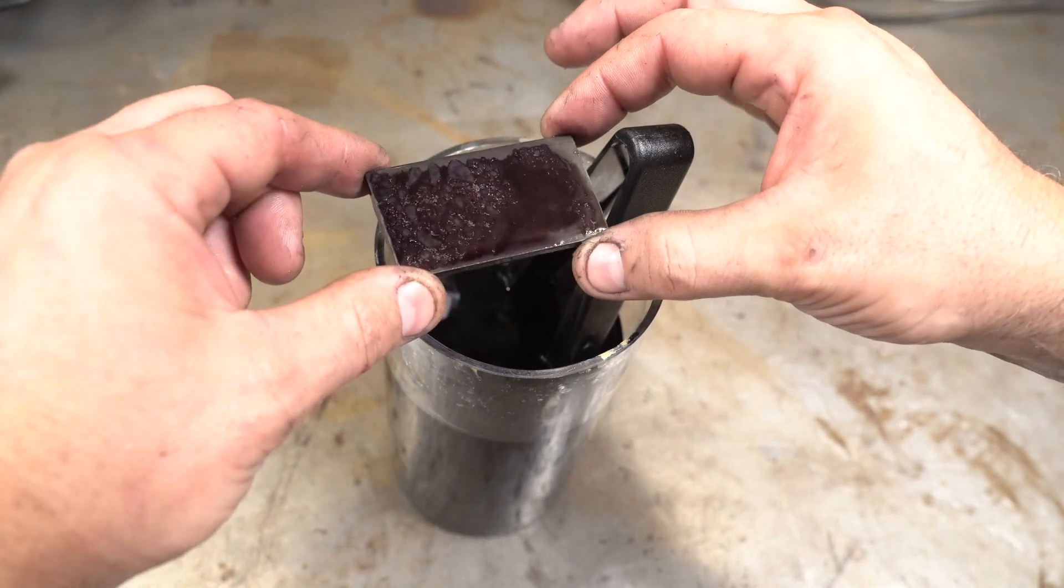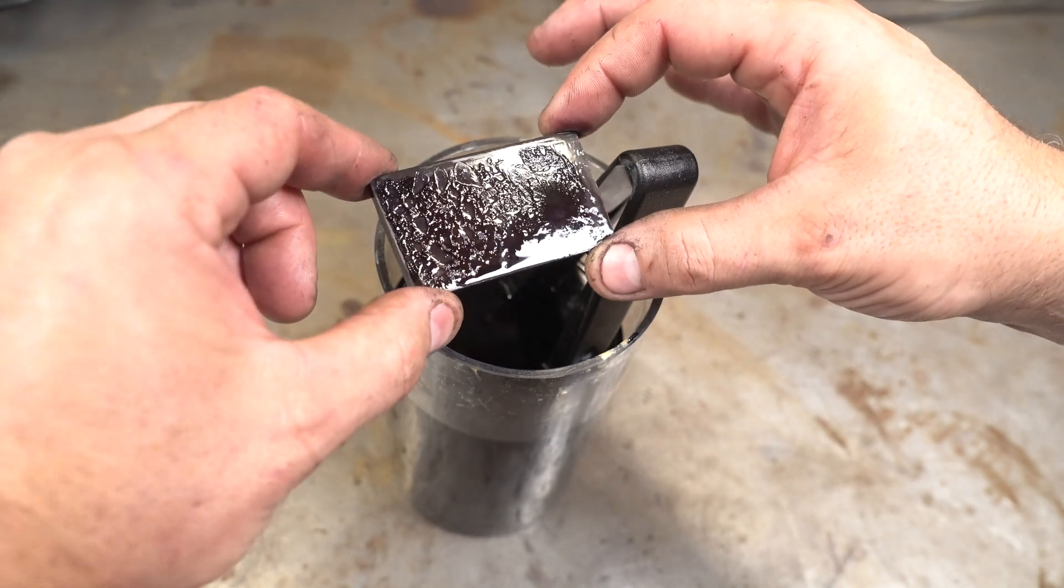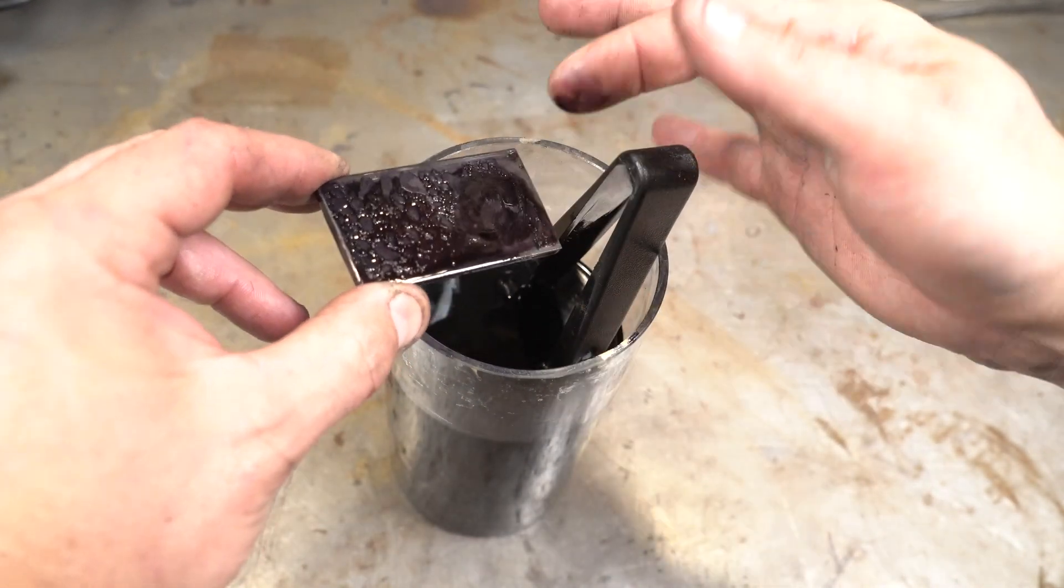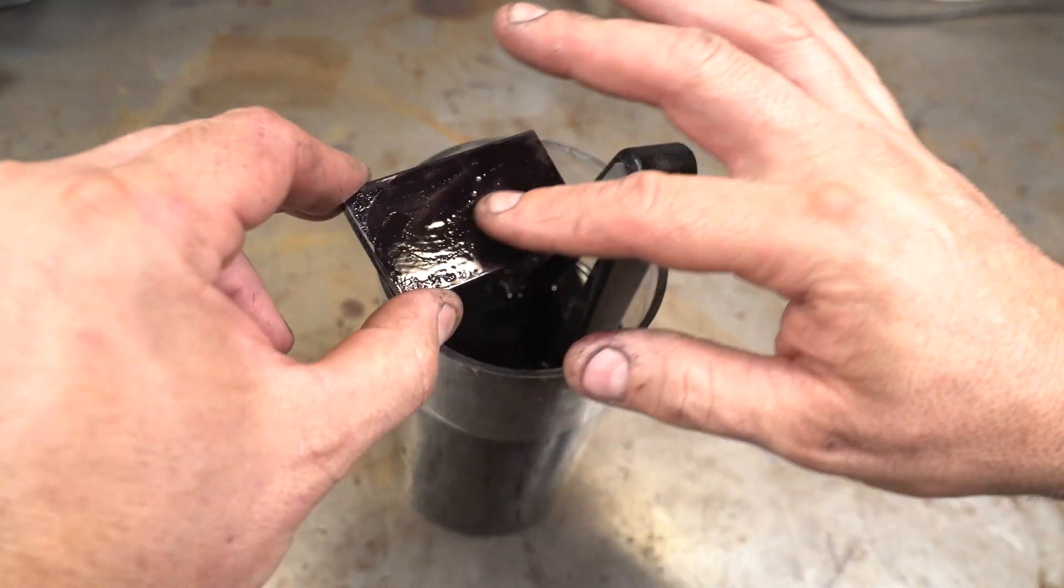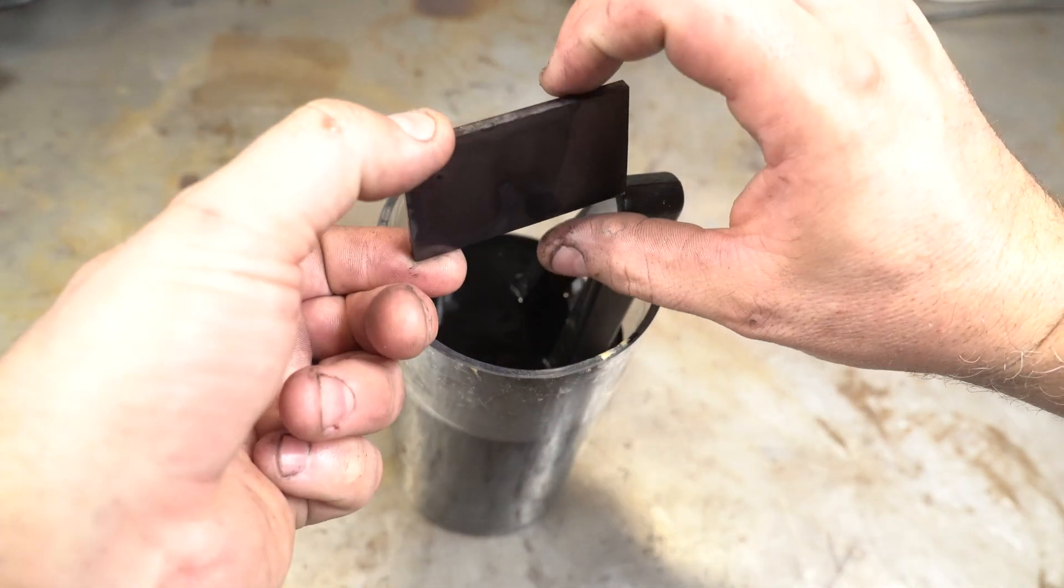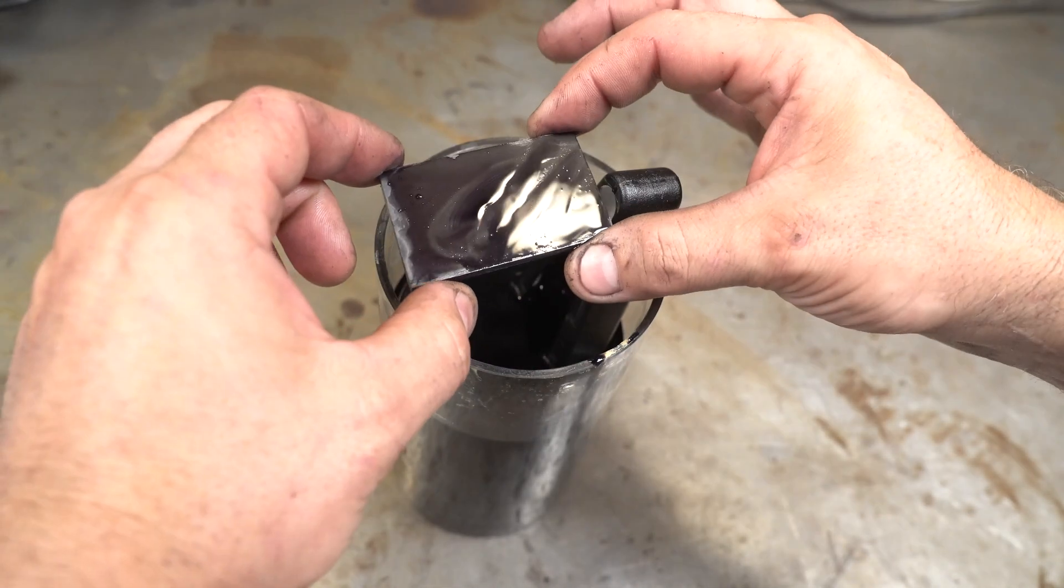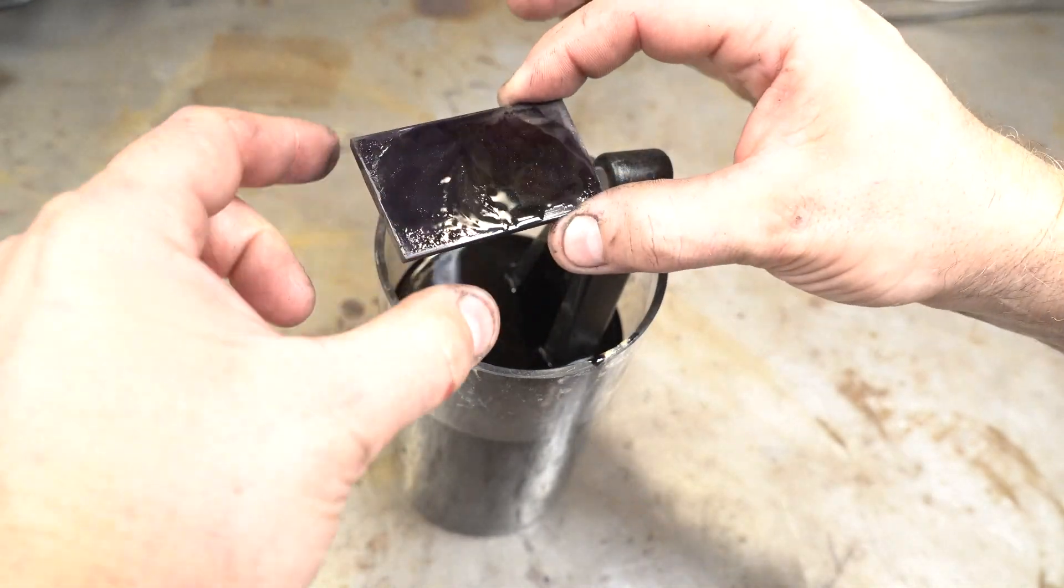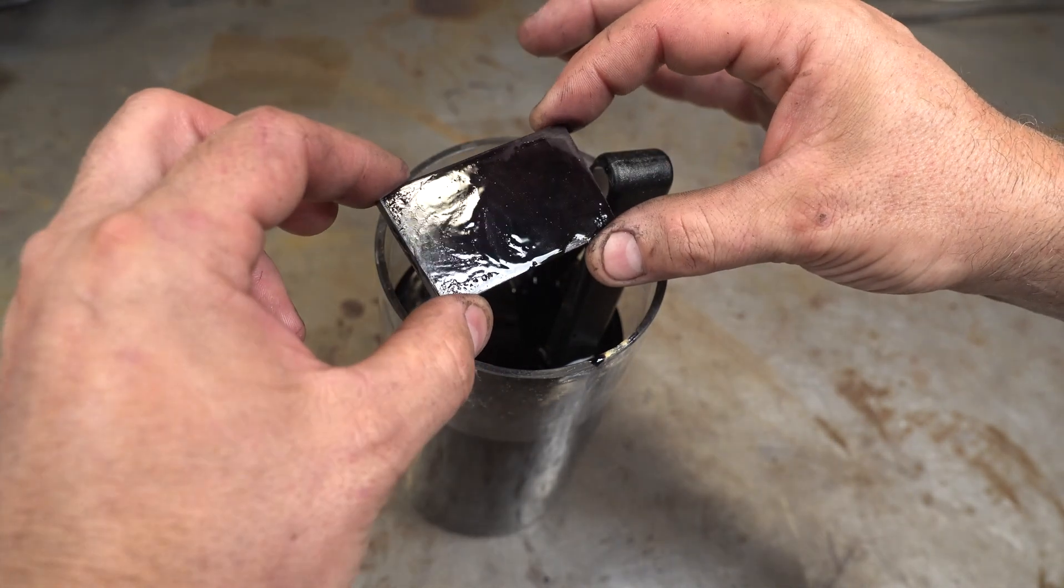So this side is much darker. That's the side that was down. That's interesting. And it's kind of a, I don't know if it comes across in the camera, but it's kind of a purpley color. This side is definitely darker. Hmm. So it's pretty non-conclusive right now. Maybe this is just not a strong enough acid for this.